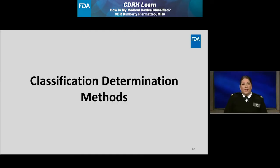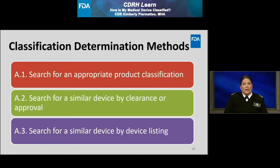Next, I'm going to discuss three classification determination methods. These methods are not the only methods available, but ones I find helpful when determining how a medical device may be classified. The three methods are: one, to directly search for the appropriate product classification; two, to search for a similar device by its clearance or approval; and third, to search for a similar device by device listing. I encourage you to watch the companion CDRH Learn module, which covers each of these methods in more detail using a specific case study.